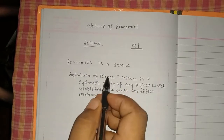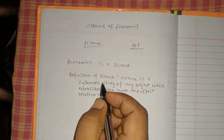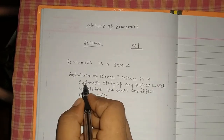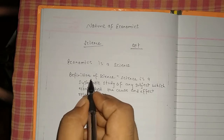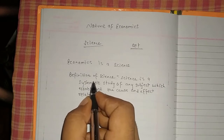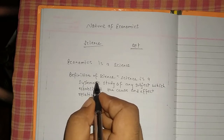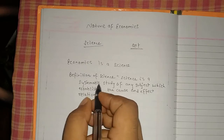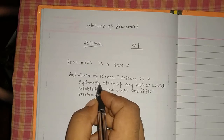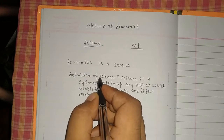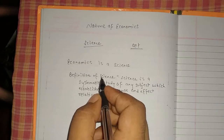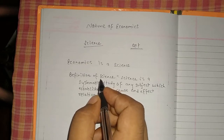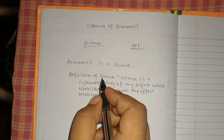How is economics a science? To prove that economics is a science, first we have to be familiar with the definition of science. To prove whether it is a science or not, we must know the definition of science and its requirements. If economics fulfills all those requirements, then it is a science.